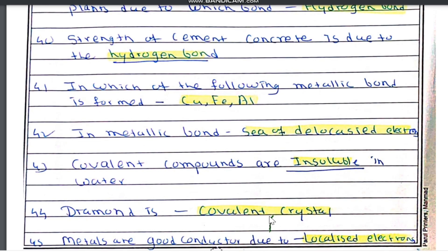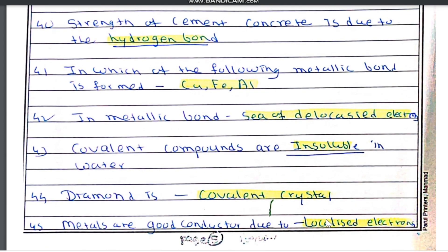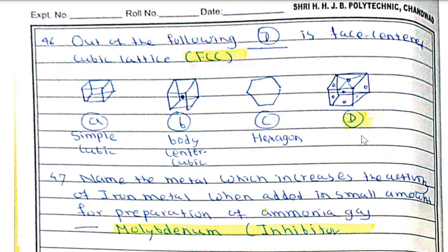Covalent compounds are insoluble in water. Diamond is a covalent crystal. Metals are good conductors due to delocalized electrons. In the crystal lattice diagram shown, option D represents face-centered cubic (FCC), option A is simple cubic, option B is body-centered cubic (BCC), and option C is hexagonal.